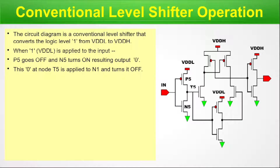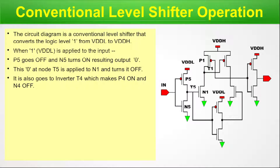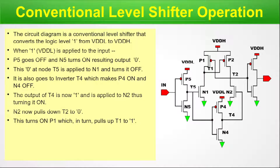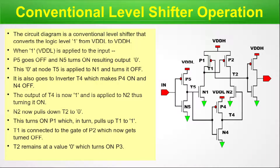This 0 at node T5 is applied to N1 and turns it off. It also goes to inverter T4, which makes P4 on and N4 off. The output of T4 is now 1 and is applied to N2, turning it on. N2 pulls T2 to 0. This turns on P1, which in turn pulls T1 to 1. T1 is connected to the gate of P2, which now gets turned off. T2 remains at level 0, which turns on P3.